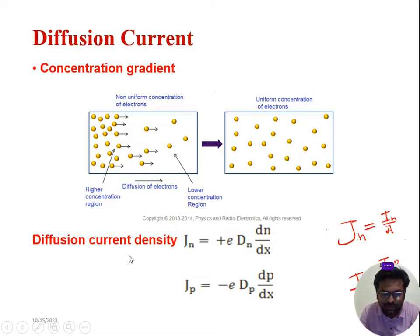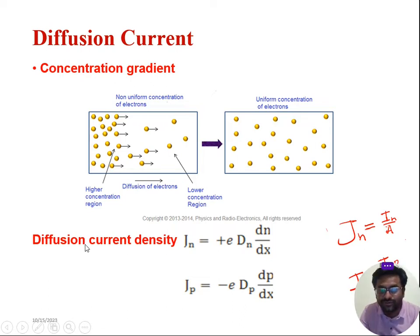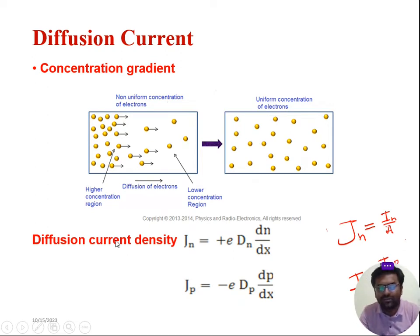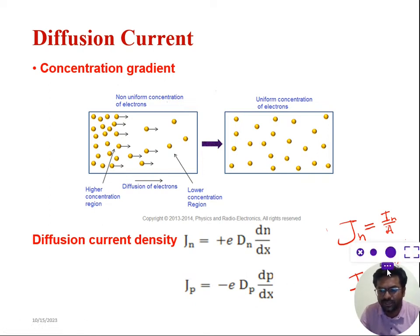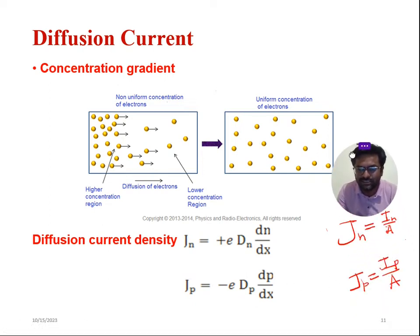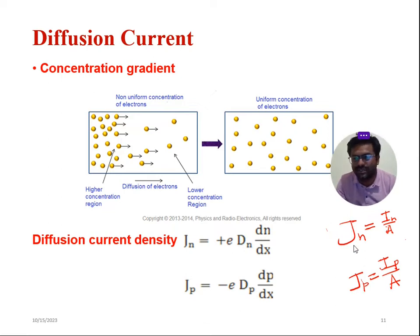Now we define diffusion current in terms of diffusion current density. You may ask what may be the reason for current density — why not simply diffusion current? It's very simple. These semiconductor devices are of solid structure. For the solid structure, current can be taken with respect to current density, not like a linear current.